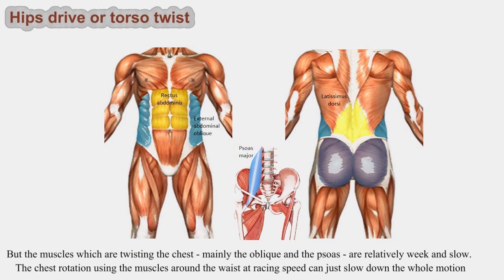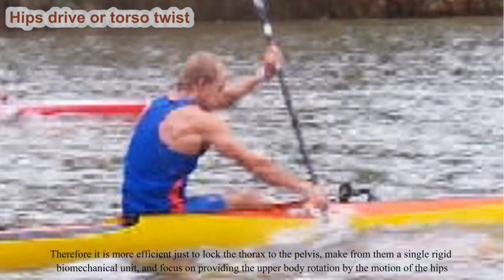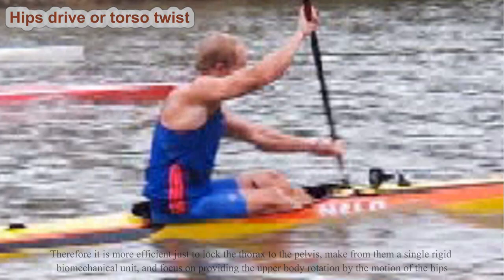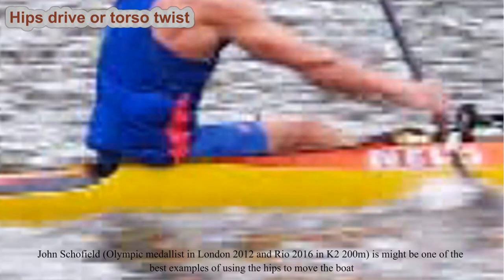The majority of muscles connecting the thorax to the pelvis — such as the abdomen muscles, abs, lumbar, etc. — are designed more to lock them together and tend to slow down the torso twist rather than facilitate it. Therefore, it is more efficient to lock the thorax to the pelvis, make from them a single rigid biomechanical unit, and focus on providing the upper body rotation by the motion of the hips. John Schofield, Olympic medalist in London 2012 and Rio 2016 in K2 200m, might be one of the best examples of using the hips to move the boat.